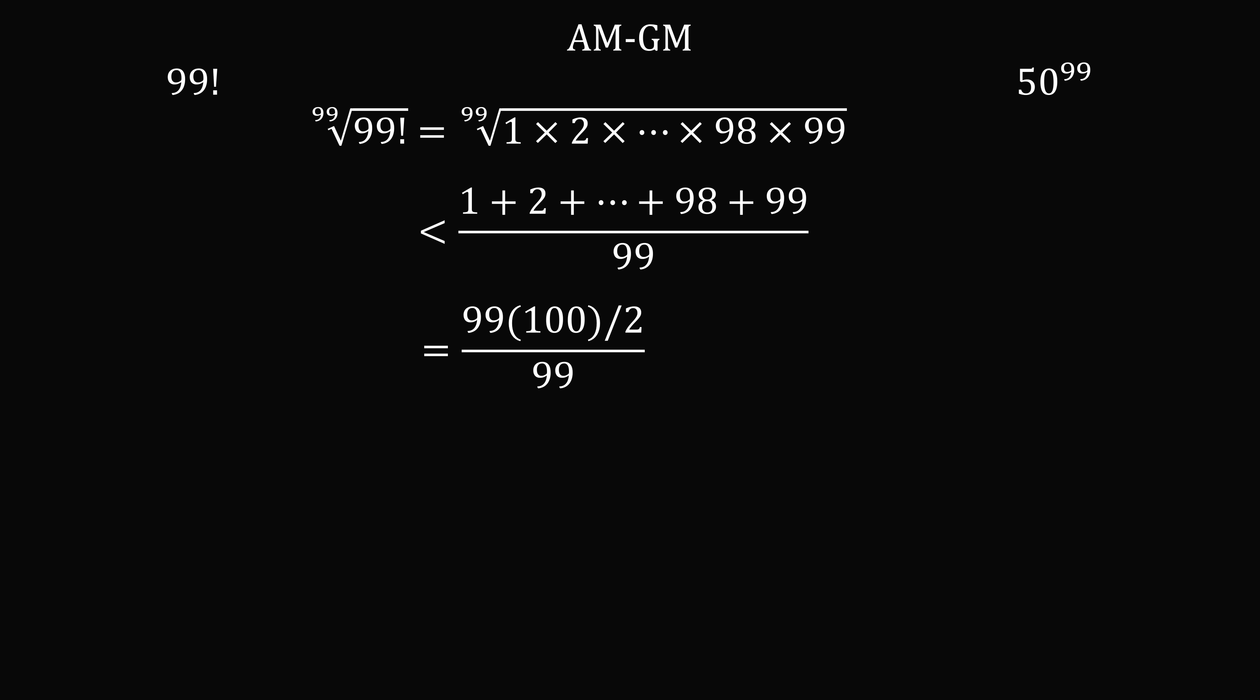The 99s will cancel out. Then 100 divided by 2 is equal to 50. So this is equal to 50.